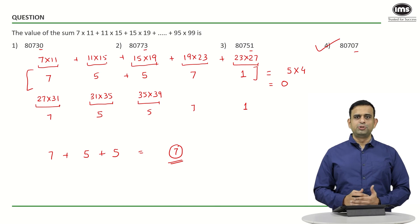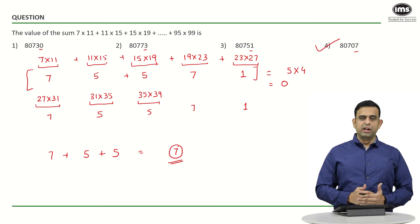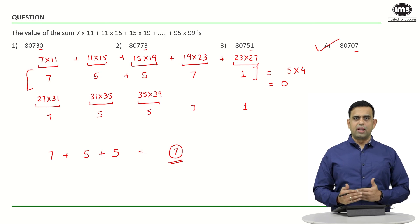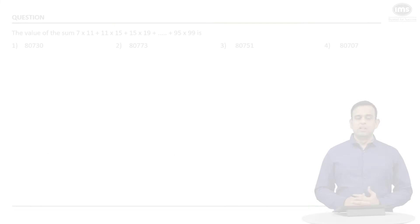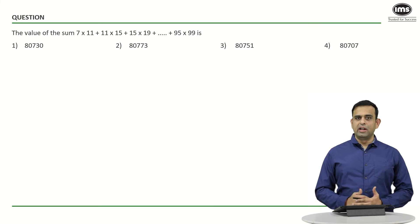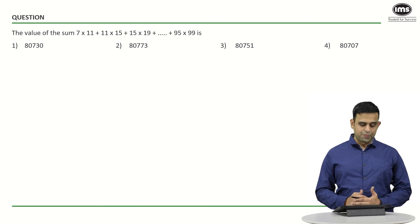This was the Jugaad method — since the options had different last digits, we could apply this logic. Let's look at one more method; it's a difficult one but I'll try to explain it.